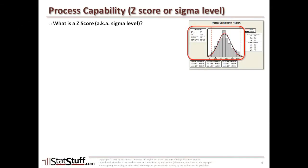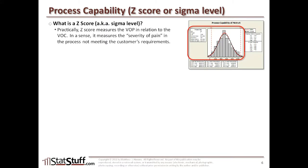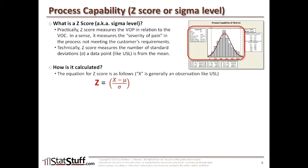Now let's shift gears and define the z-score, also known as the sigma level, and how you can calculate it. From a practical sense, the z-score represents the voice of the process in relationship to the voice of the customer — it measures the severity of pain in the process where we're not meeting the customer's requirements. From a technical standpoint, the z-score measures the number of standard deviations that a point, like the upper spec limit, is from the mean. The equation is: Z equals X minus the mean, divided by the standard deviation, where X typically refers to an observation point like the upper spec limit.